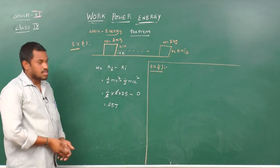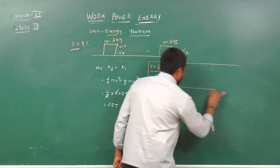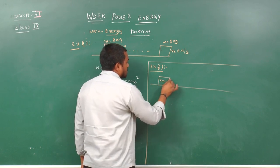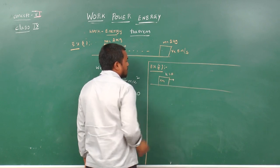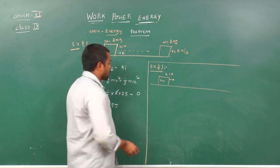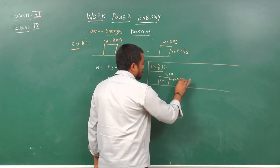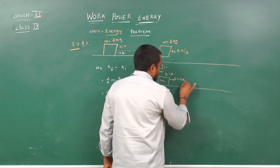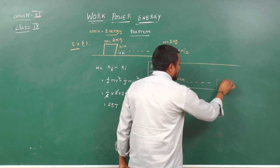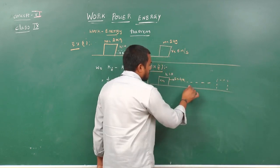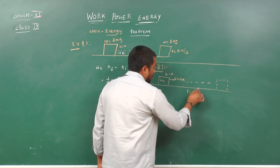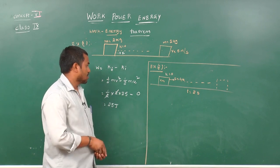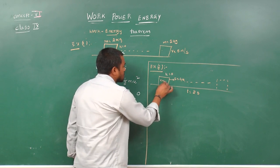Example 2: A block of mass is initially at rest. By applying a force of 4 Newtons, its velocity gradually increases. What is the work done by this force in a time interval of 2 seconds? After 2 seconds, what is the work done by this force? Mass of the body is assumed to be 2 kg.